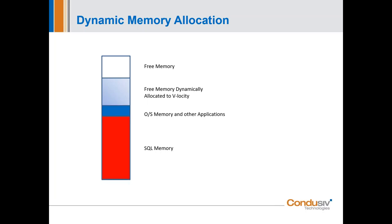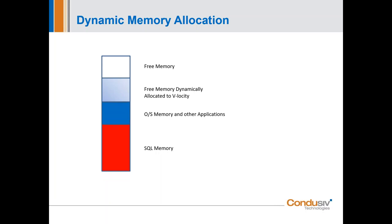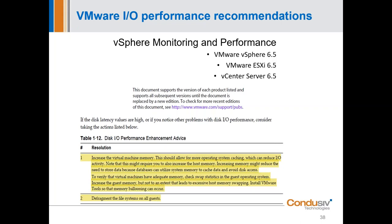Thank you, Howard. I want to bring up one more thing. I'm going to get to this technical recommendation by VMware because I know a lot of folks are running Horizon. This is directly from VMware's disk performance enhancement advice documents. The first one says: 'Increase the virtual machine memory — this should allow for the operating system to do more caching, which would offload IO from the subsystems.'